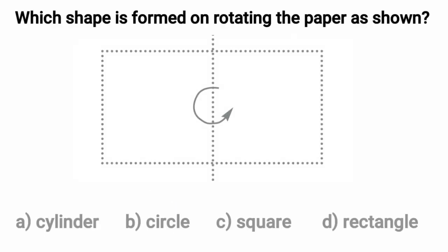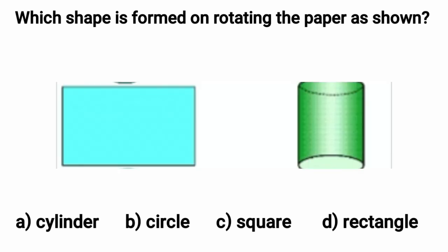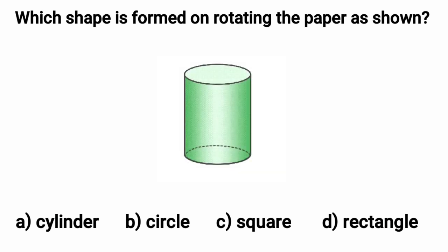Let's look carefully at the fourth question. Which shape is formed on rotating the paper as shown? When we will rotate the paper, kids, in the given direction, we get a shape similar to pipe. Actually, it is a cylinder. Yes, option A, cylinder is the right option here and we have to put a tick mark at option A. That is cylinder.